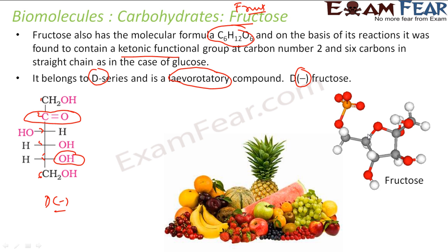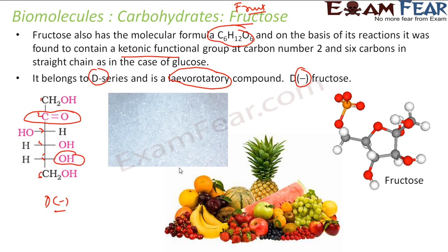This is the three-dimensional structure of fructose. Pure and dry fructose is very sweet, white, odorless, and crystalline solid. It is the most water-soluble sugar and is generally found in honey, grapes, root vegetables, flowers, etc.